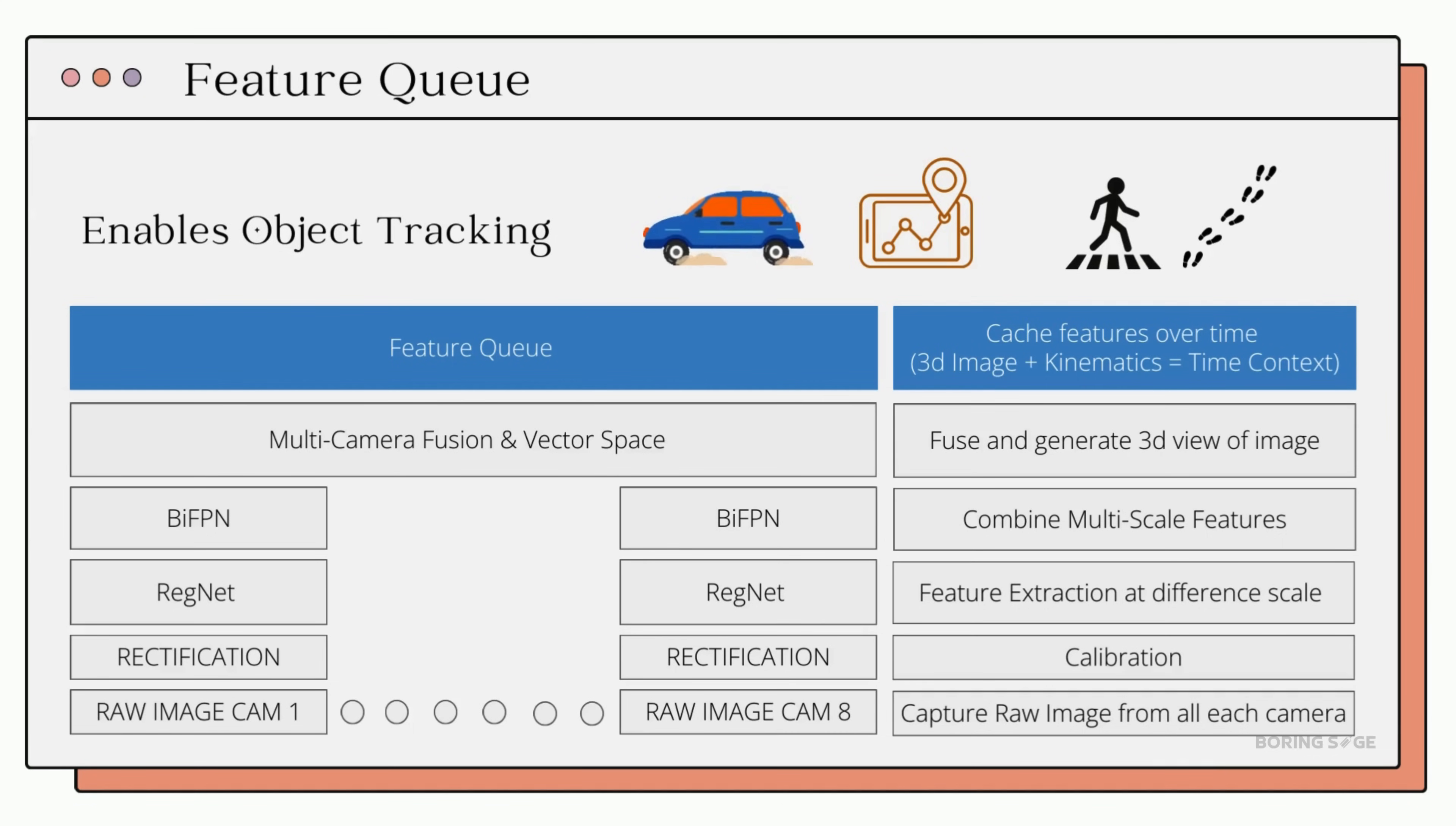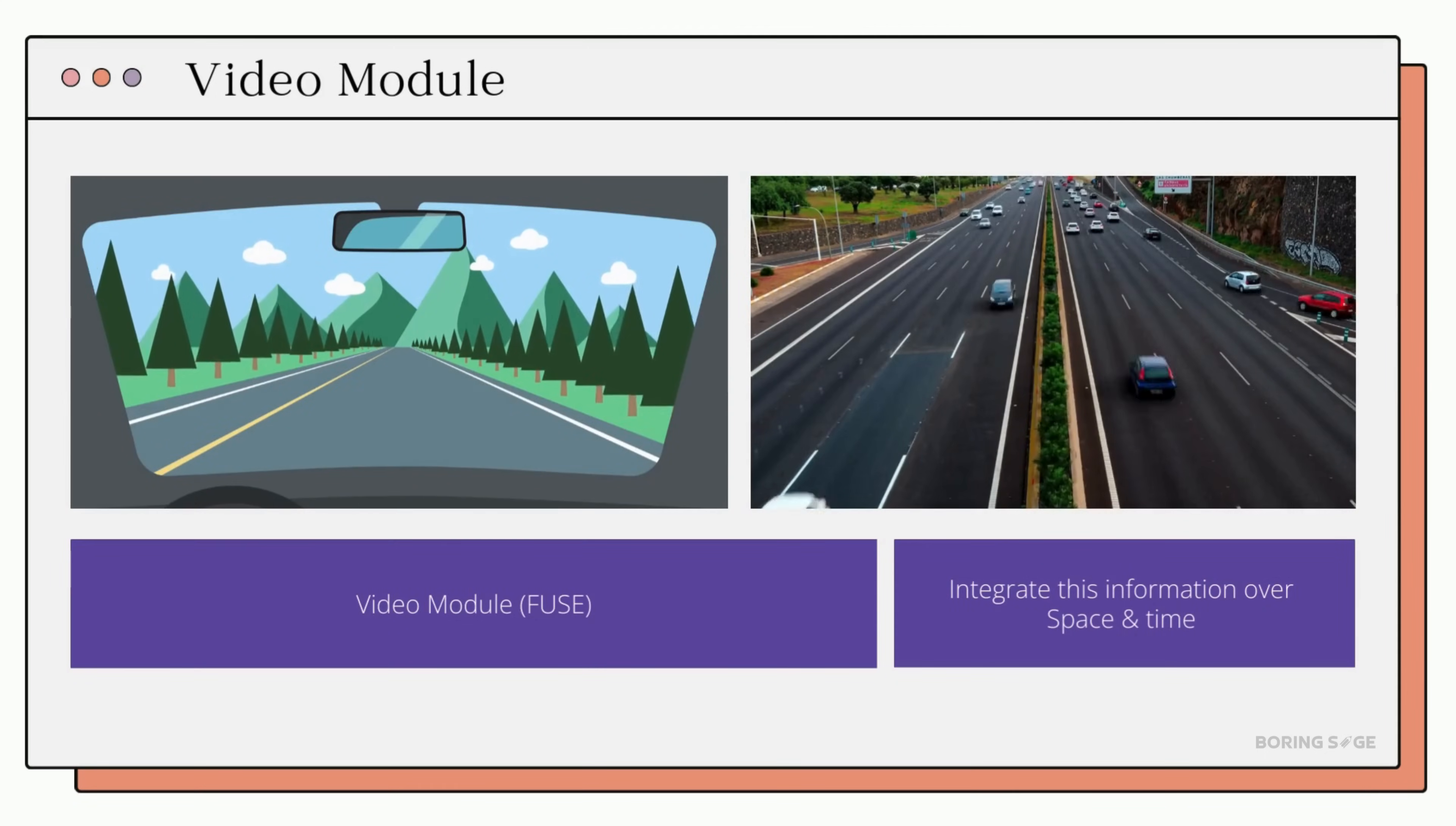Feature Queues are great at predicting individual trajectories of each agent in the scene or each pedestrian or car. What about the entire environment or the scene? That's the job of the video module.